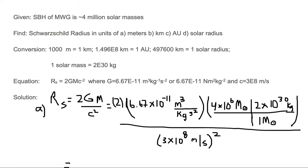So we have meter cubed in the numerator, kilogram in the denominator, and second squared in the denominator. We multiply by 4 million solar masses — that's 4×10⁶ — and convert solar masses using 1 solar mass equals 2×10³⁰ kilograms. That gives us 2GM in the numerator, and now we need c² in the denominator.